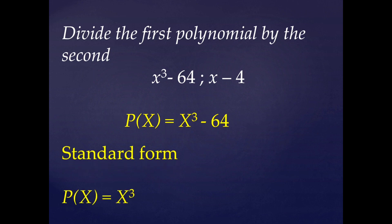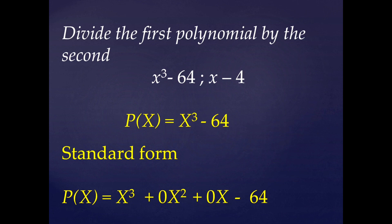So first of all, we have to write it in the standard form, i.e. write the terms in descending order of power of x. That is x³; the x² term is not there, so we write 0x²; the x term is also not there, so it is 0x; and lastly the constant term -64. Now all the terms are in descending order of power of x, so this is in the standard form.